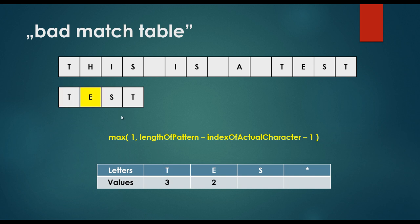For character E at index 1: maximum of 1 and (4 minus 1 minus 1) = maximum of 1 and 2, which is 2. So the value associated with E is 2. For character S at index 2: maximum of 1 and (4 minus 2 minus 1) = maximum of 1 and 1, which is 1. So the value associated with S is 1.